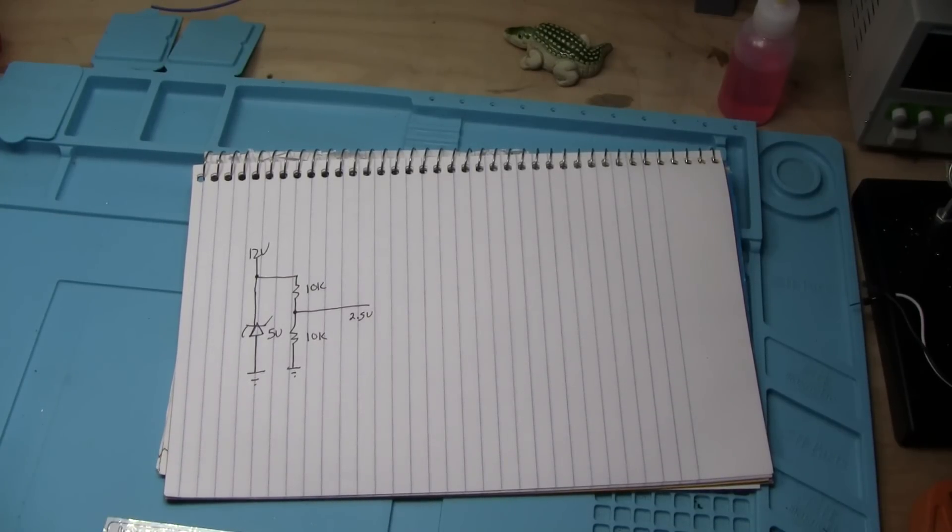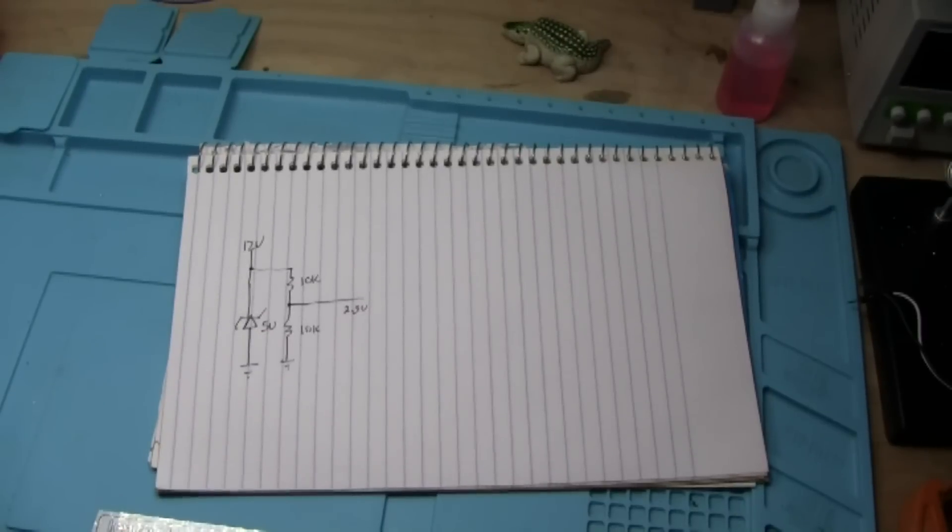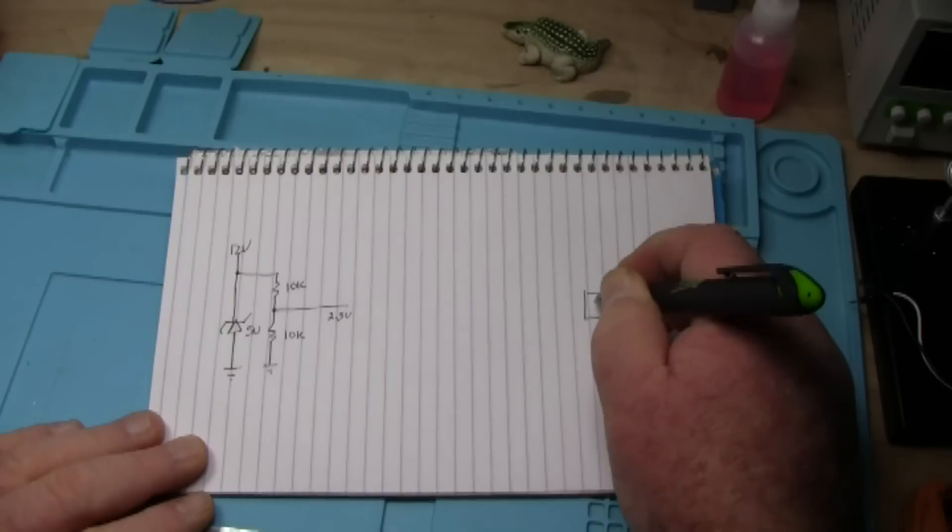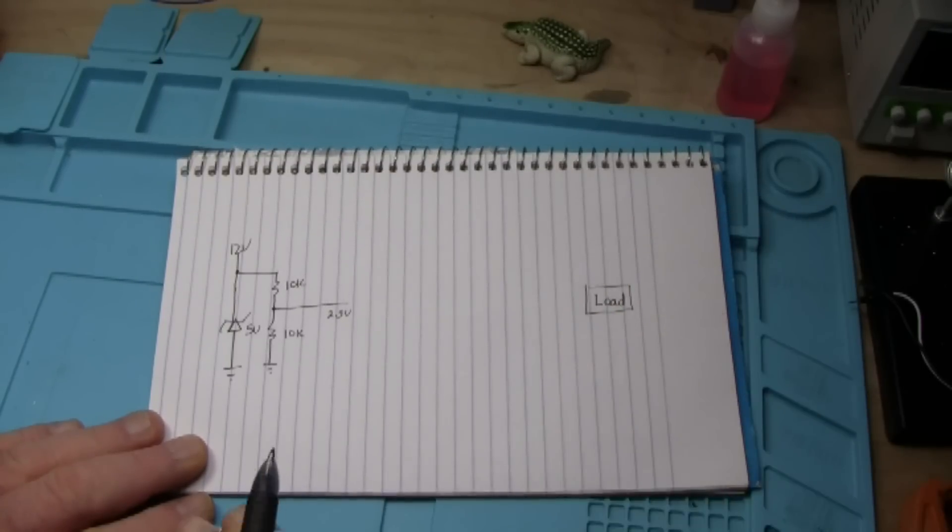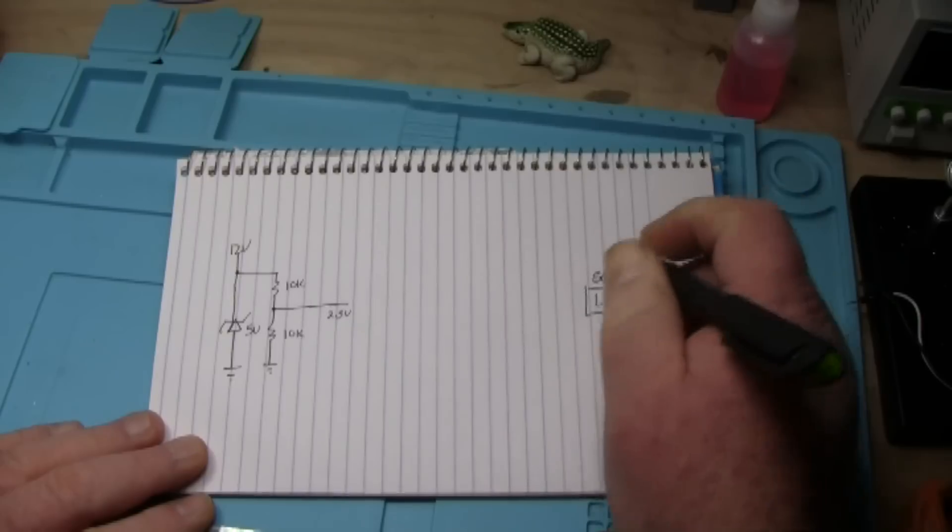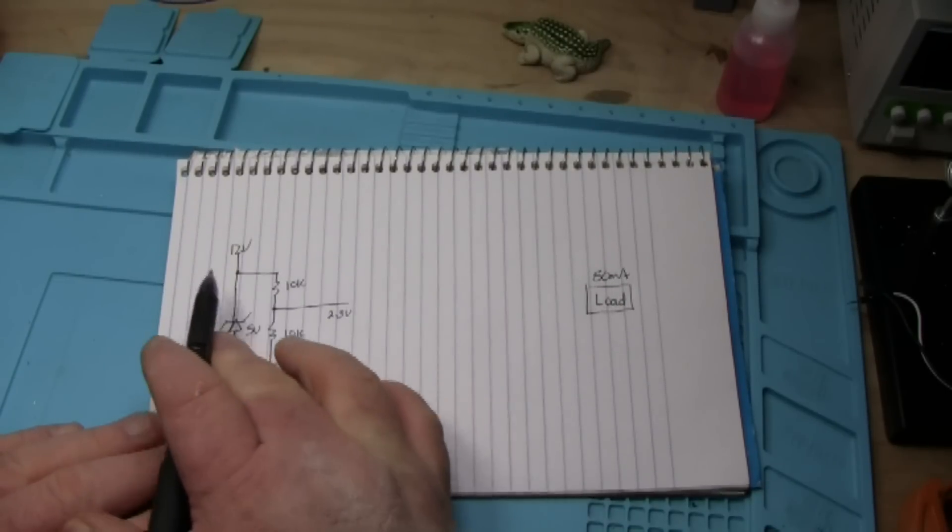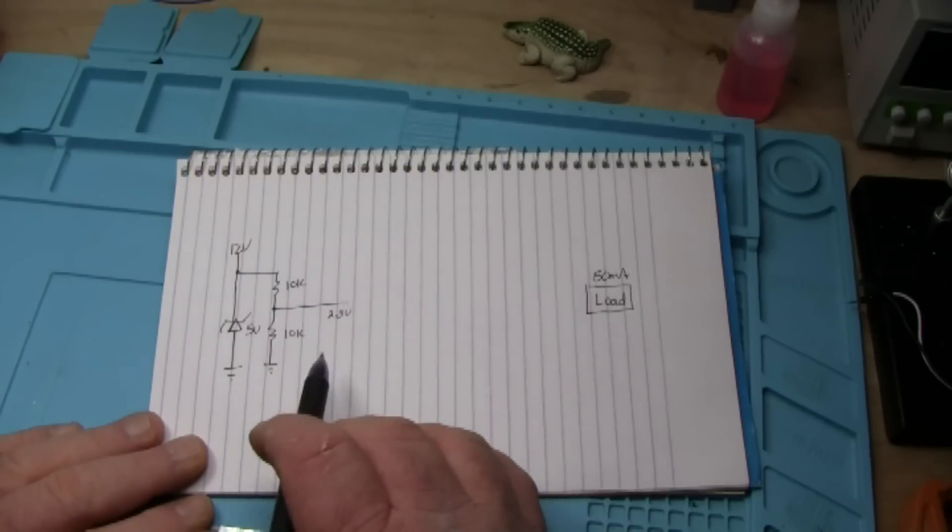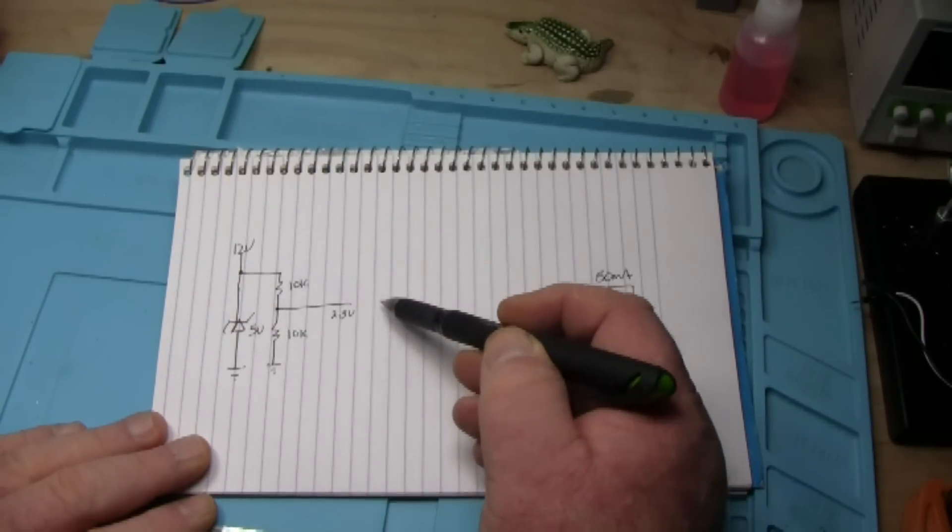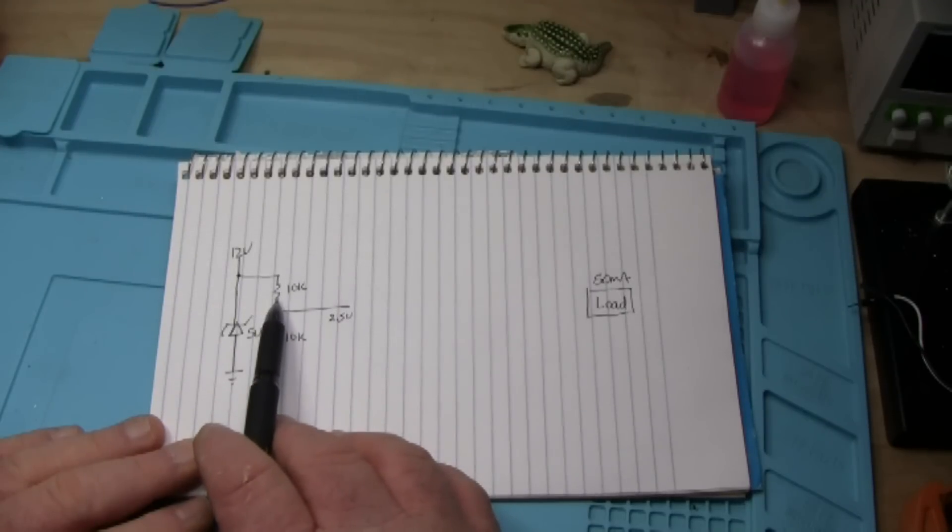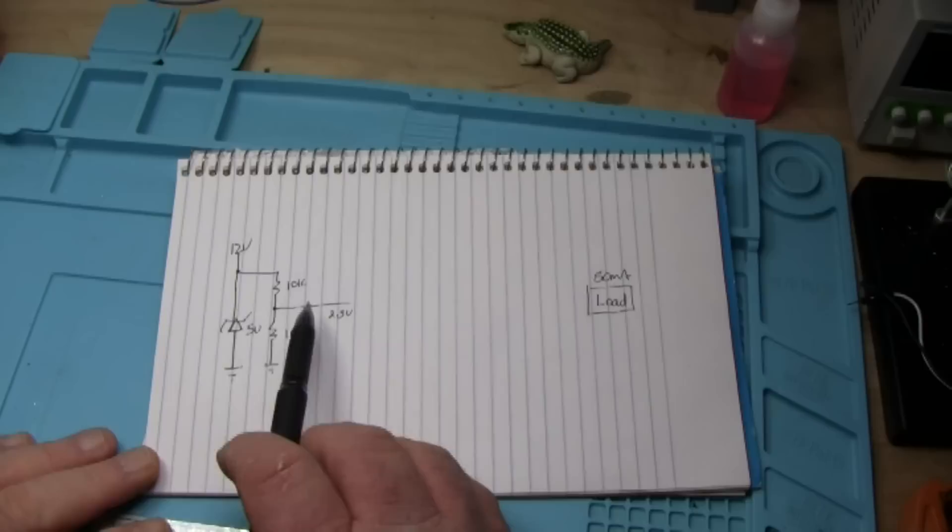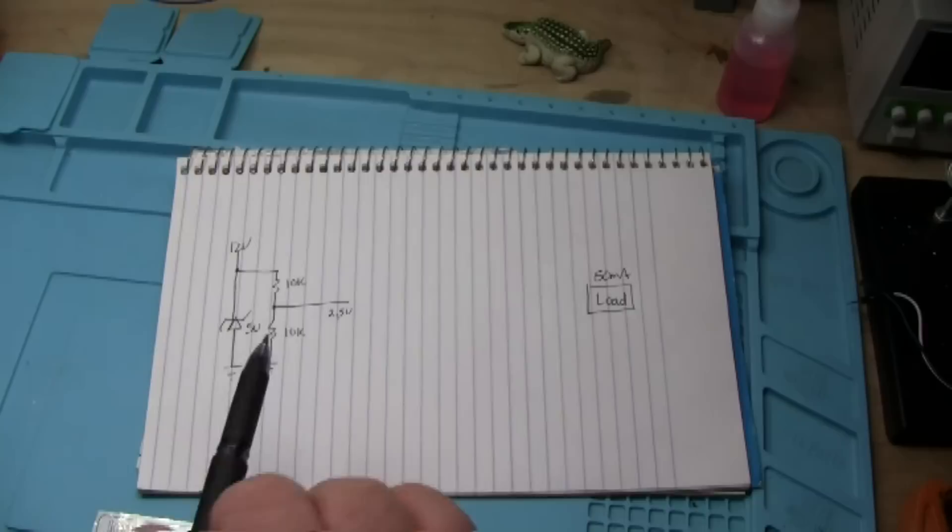But let's say over here our load, whatever it might be, needs 50 milliamps. Well where does the current that's going to power this come from? Well it comes from our 12 volt source through this resistor and over here. So we put that current through the resistor, the resistor is going to get a little bit hotter and it is going to not put out exactly 2.5 volts because its value is going to change slightly.